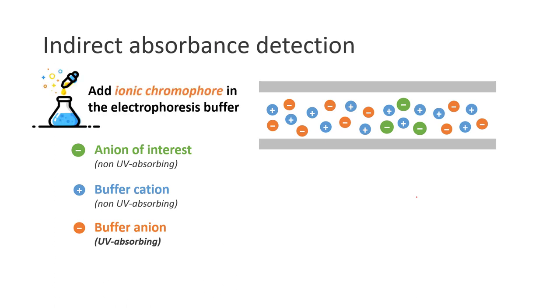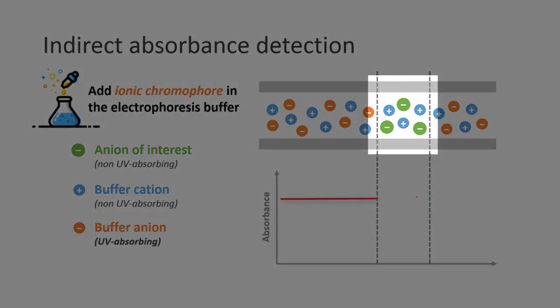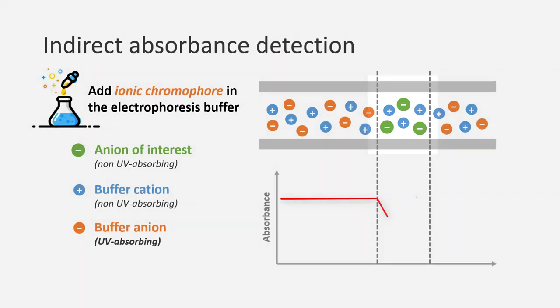To solve this problem, we can add an ionic chromophore in the electrophoresis buffer. The detector will receive a constant signal due to the presence of ionic chromophore in the buffer. When our anion of interest passes through the detector, the concentration of the ionic chromophore decreases. So we will see a drop in the absorbance. This is what we call the indirect absorbance detection.